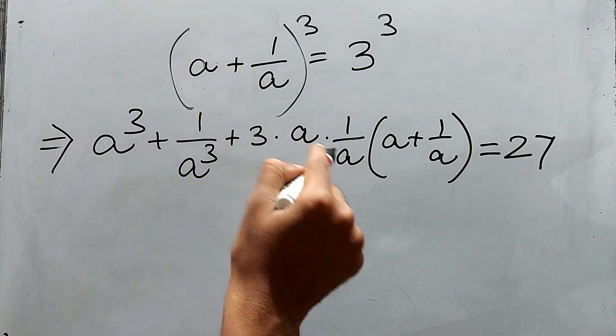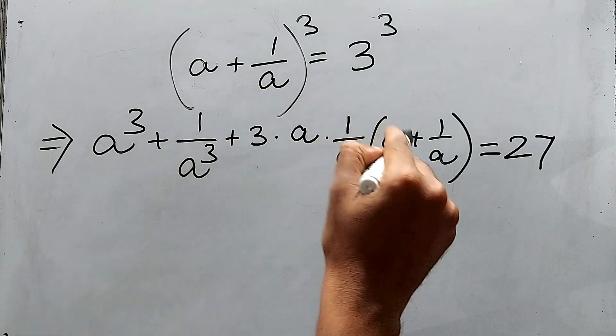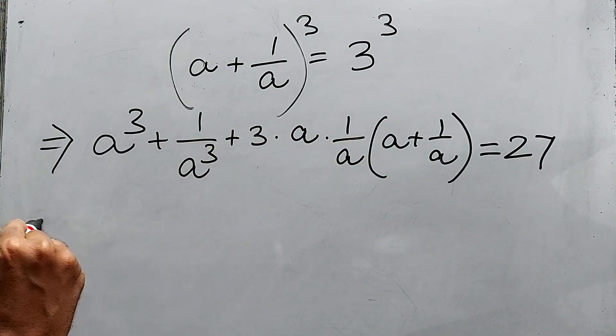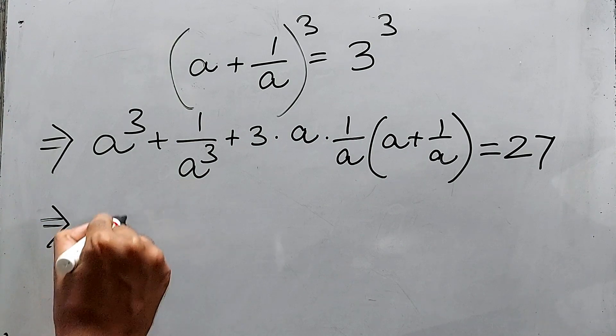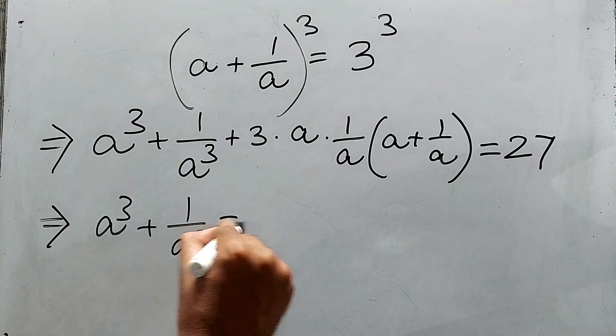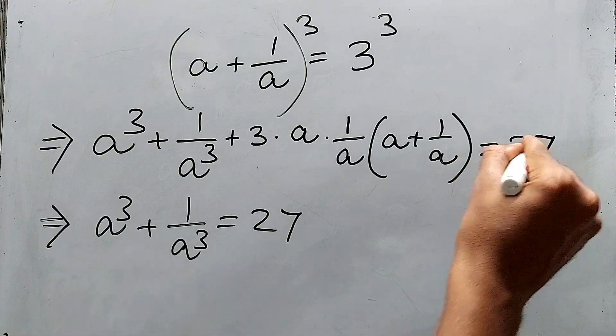Therefore, a^3 + 1/a^3 = 27 from this side, and this 9 will be subtracted because 3 * 3 is 9.